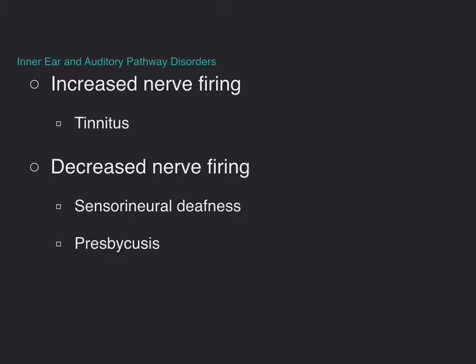When we look at inner ear and auditory pathway disorders, one very common problem is increased nerve firing, which is associated with tinnitus. Tinnitus is the perception of abnormal ear or head noises not produced by an external stimulus. Although it's often described as ringing in the ears, it can also make a hissing, roaring, buzzing, or humming sound. Tinnitus can be constant or intermittent, unilateral or bilateral. The condition affects both sexes equally and tends to be more prevalent between the ages of 40 and 70, though it occasionally affects children.